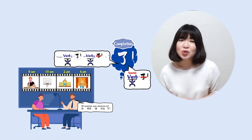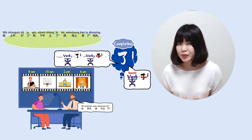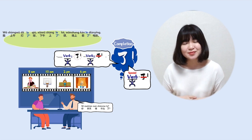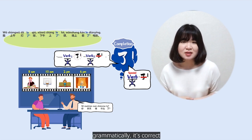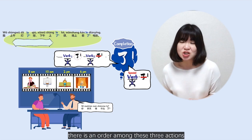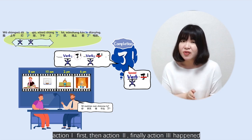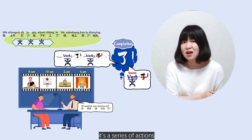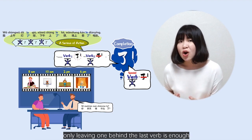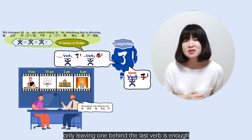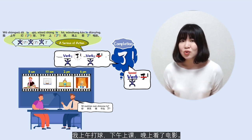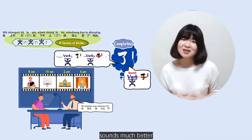你昨天做什么了? 我上午打了球，下午上了课，晚上看了电影. Grammatically it's correct, but it's not natural because it's too wordy. There is an order among these three actions — it's a series of actions. It's not necessary to put 了1 behind each verb. Only leaving one behind the last verb is enough: 我上午打球，下午上课，晚上看了电影. Sounds much better.